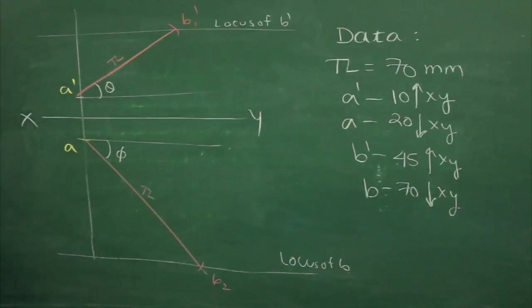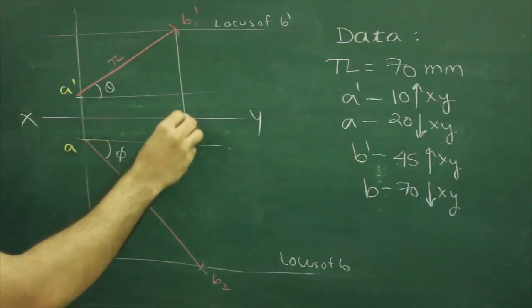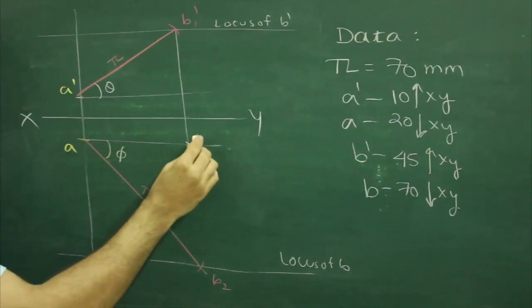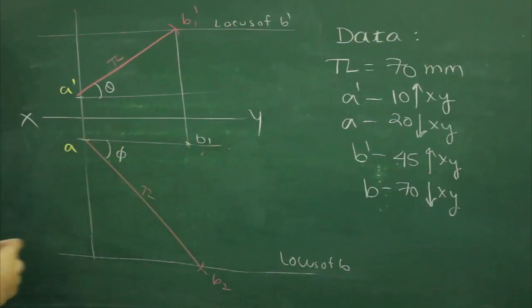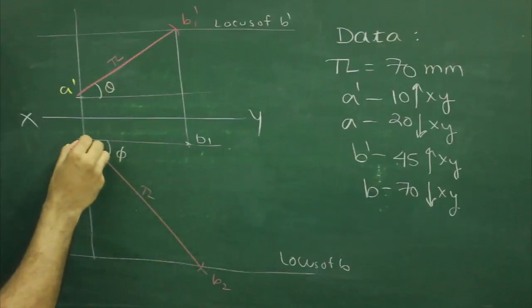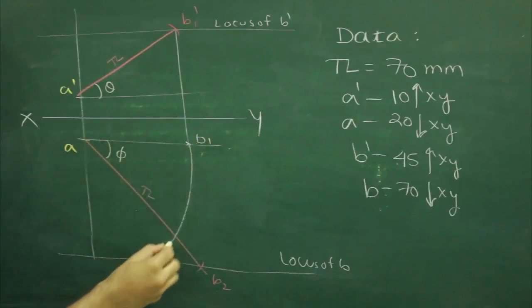After that to find top view, we need to project this point B dash straight down till it intersects horizontal line drawn from A, and that point would be B1. Then take A to B1, keep point A fixed, take A to B1 and rotate till here. Wherever it will cut locus of B, that would be B.